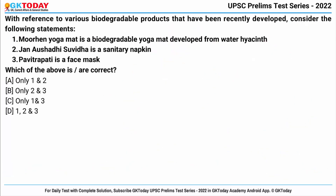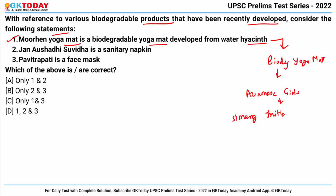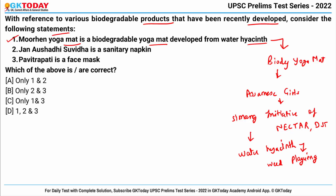Last question: with reference to various biodegradable products recently developed, consider the following statements. Statement one says Morhen yoga mat is a biodegradable yoga mat developed from water hyacinth. This yoga mat was developed by Assamese girls under the Simang initiative of NECTAR-DST, and was manufactured from water hyacinth, an invasive weed plaguing water bodies. This is correct.